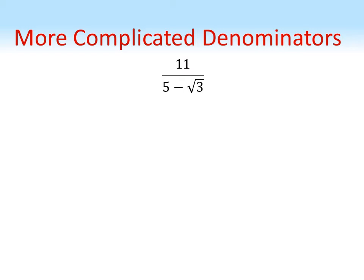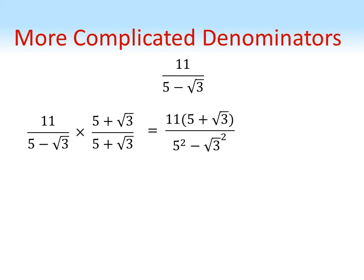And we're going to times top and bottom by this conjugate like this. If we do that, the top is nice and simple - we just have 11 lots of five plus root three. But on the bottom, because we've got five minus root three times five plus root three, we can use the difference of squares rule which gives us five squared minus root three squared.